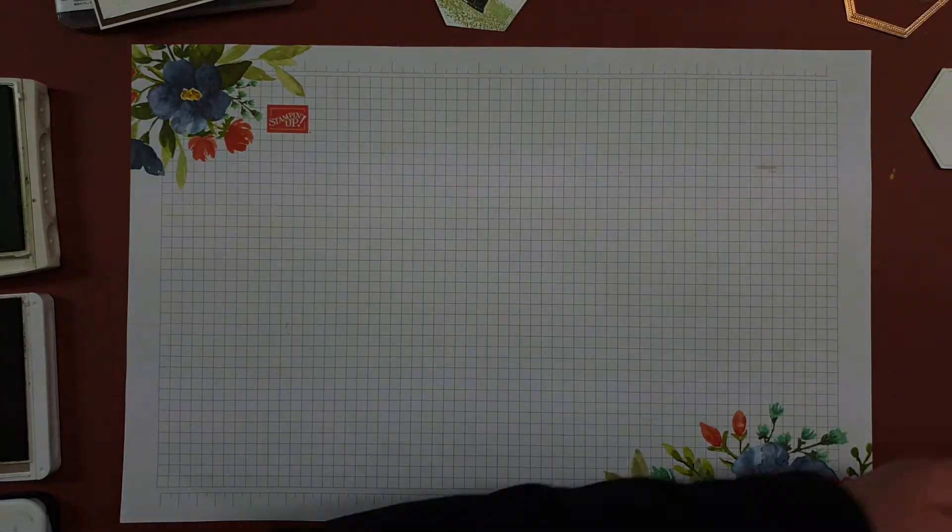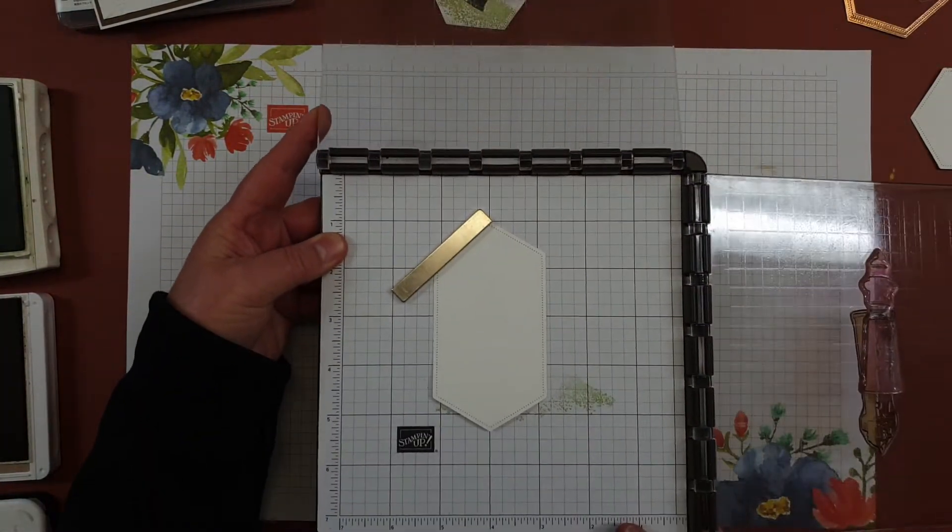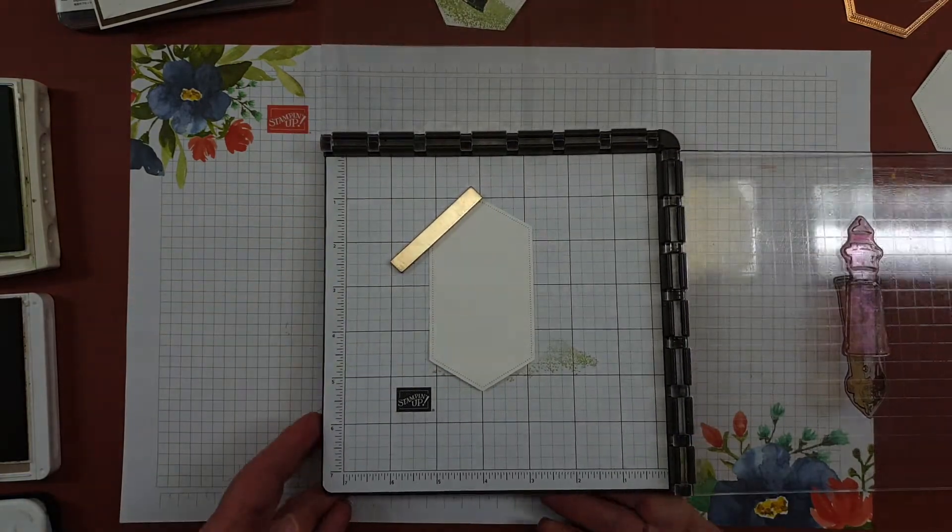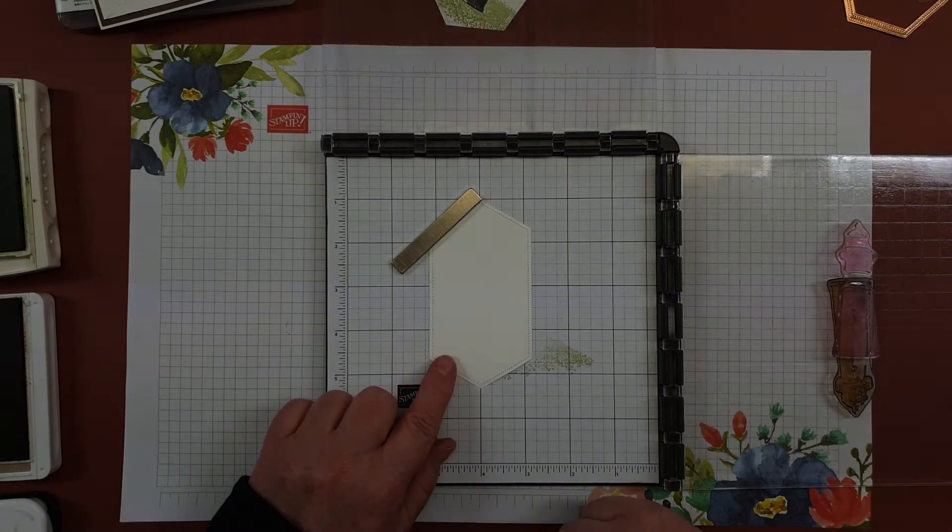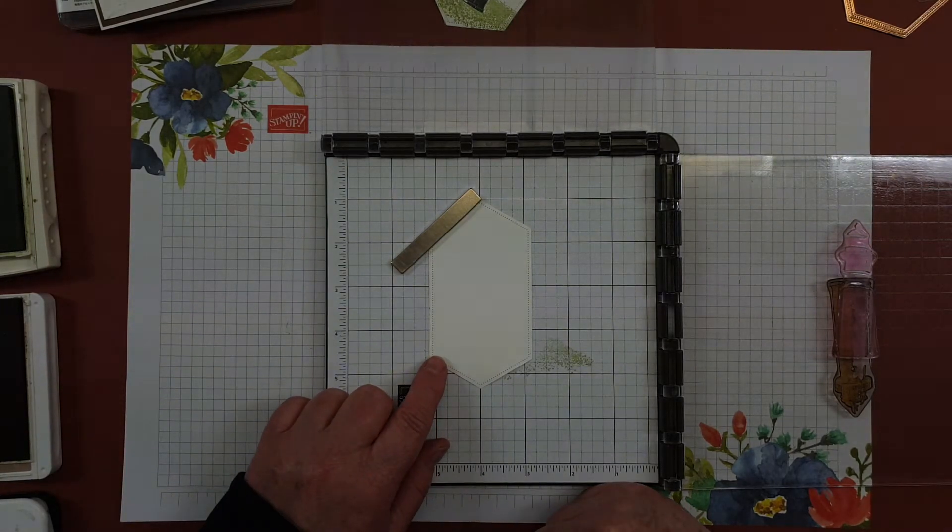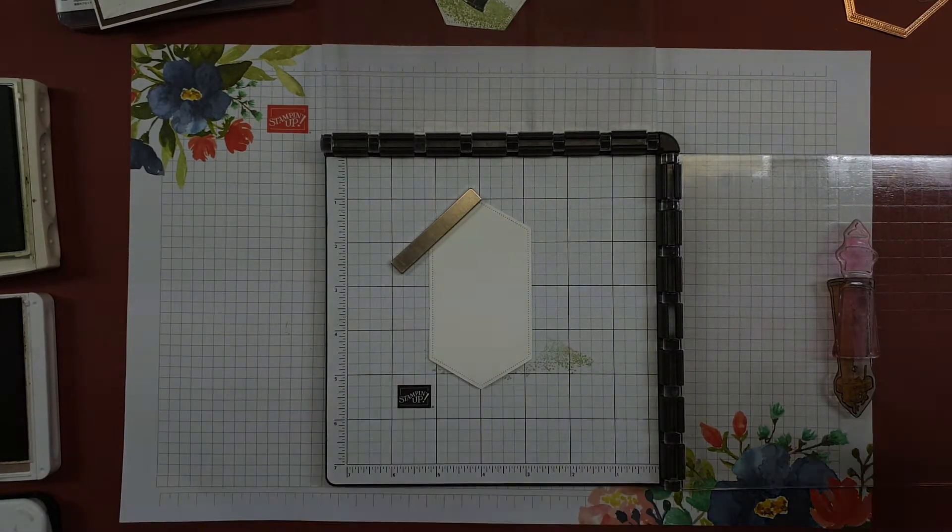When using two-step stamping I like to use my Stamparatus so I'm just going to bring that in and I've already cut out a piece of whisper white cardstock with the stitch nested label dies.